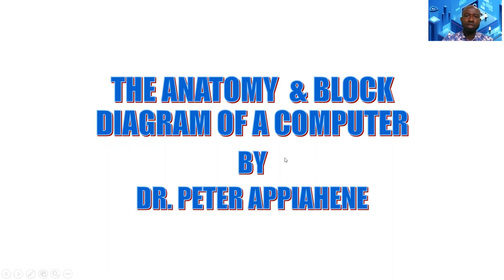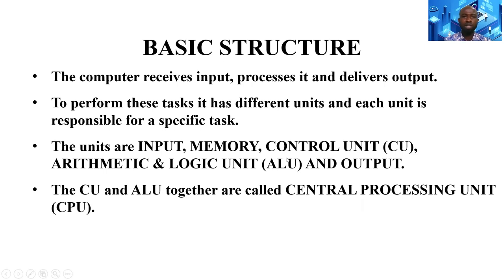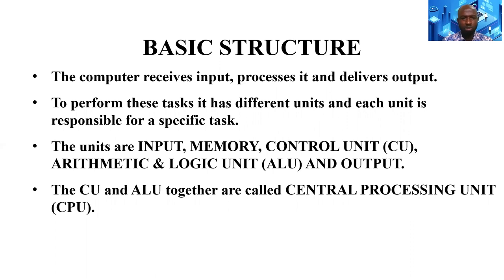We want to talk about the basic structure of a computer. The computer receives input, processes, and delivers the processed input as output. To perform these tasks, the computer has different units, each responsible for a specific task. The units are: the input unit, the memory unit, the control unit, the arithmetic and logic unit (ALU), and the output unit. The control unit and the ALU together are called the central processing unit (CPU).